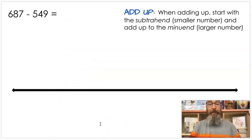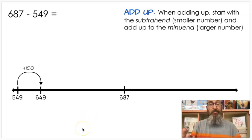Let's do one more adding up. 687 minus 549. Again, we start with the subtrahend, 549, and we go to the minuend, 687. We're going to add up again. So again, we're going to make a big jump first if we can. We're going to do a jump of 100. I couldn't do more than that because if I add another 100, it's 749. That's too big. I can't do it. So I can just do one jump.